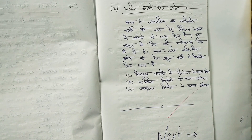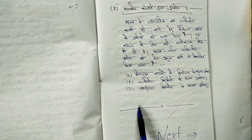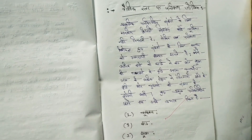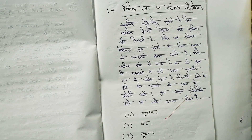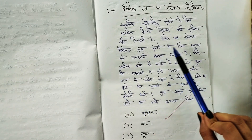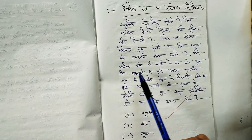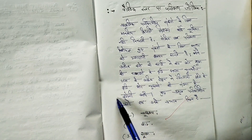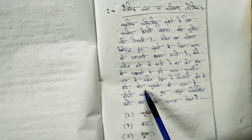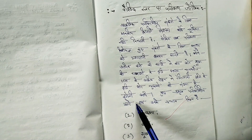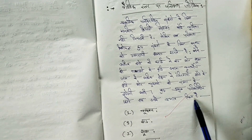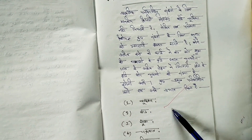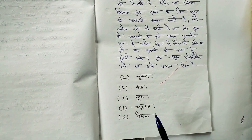Man-made hazards — maanav ne rasaynik evam nabhikiya kaarnon se vibhinn prakar ke prakop ko janma diya hai, jo samaj ke liye atihaanikarak siddh ho raha hai. Maanav janit paryavaran prakop ko teen pramukh vargon mein vibhajit kiya jata hai. Global environmental risks — jaise adik vanon ki katai se sukha, jal ke adhik dohan se registani kshetron mein vridhi, aur bhoukambon ki sankhya mein bhi vridhi. Examples: bukamba, sukha, chakravat, yameh, himpa.